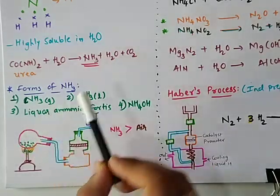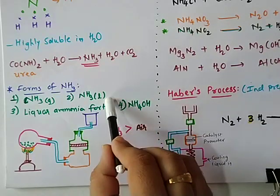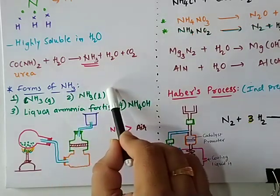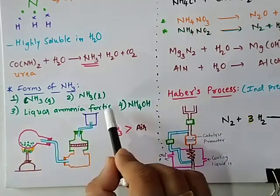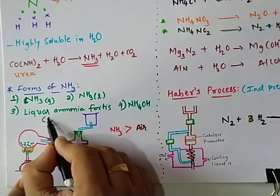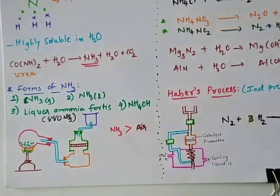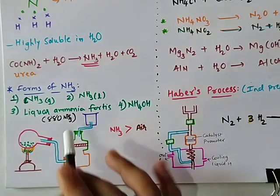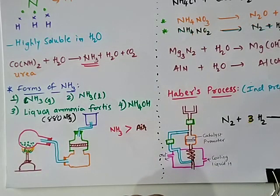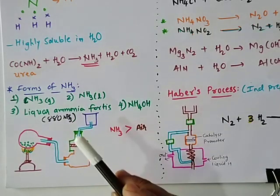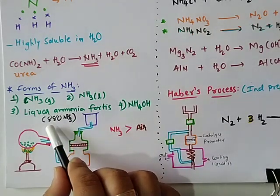Moving towards the forms of ammonia: we have ammonia in a gaseous form, and ammonia in a liquefied form — the same gas can be liquefied by applying high pressure, called liquid ammonia. The third and very important category is liquor ammonia fortis, also called 880 ammonia. This is because we make a saturated solution of ammonia in water, and at that point its relative density is 0.880.